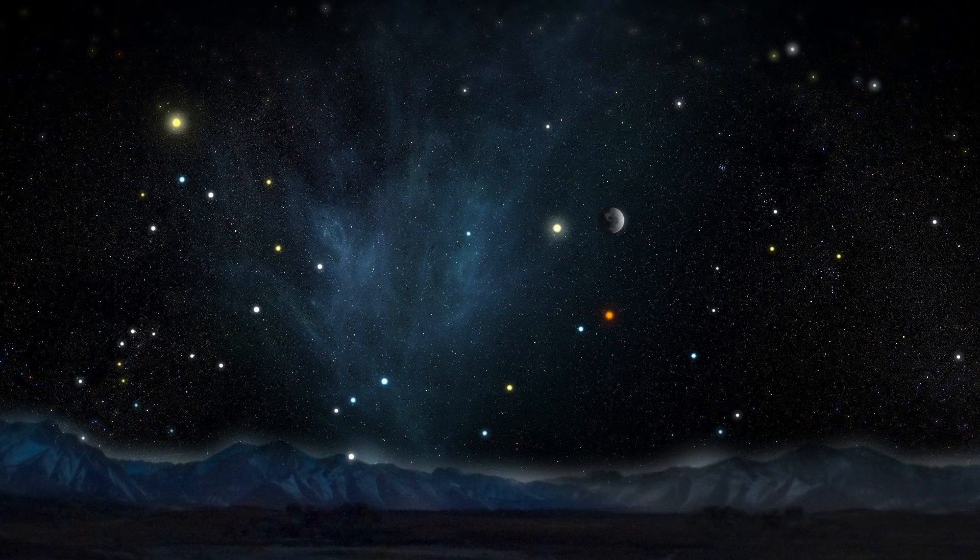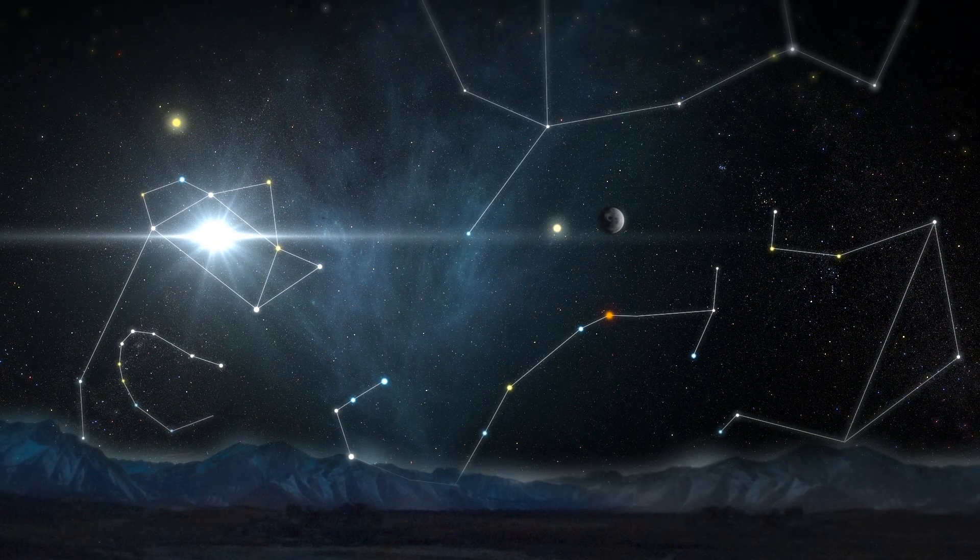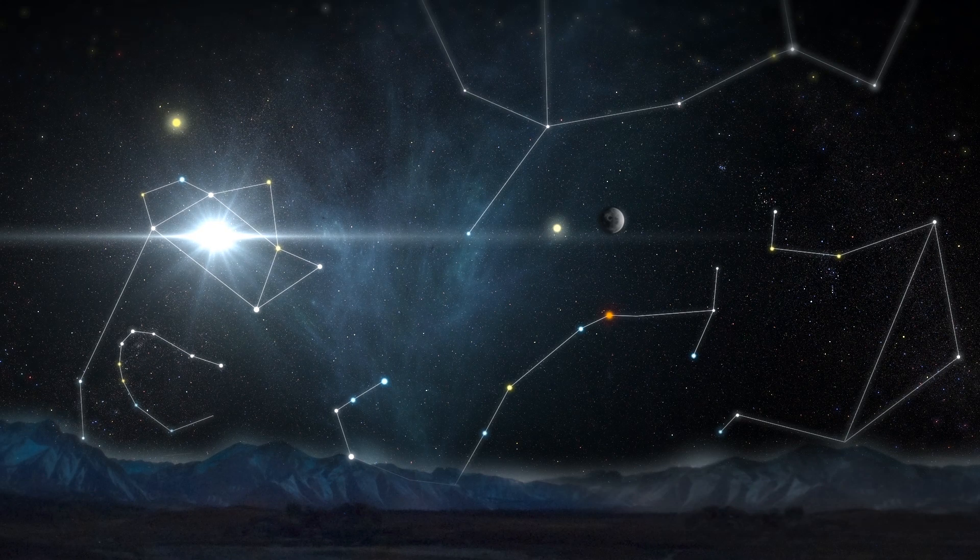Astronomers at NASA and the ESA have discovered a neutron star called SWIFT J1818.0-1607. The star was born in a supernova that would have been visible from Earth 240 years ago.